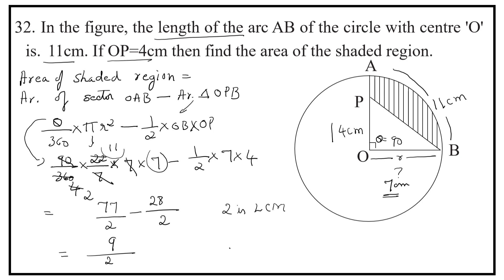If we simplify it, we get 24.5 centimetre square. So, the area of the shaded region is equal to 24.5 centimetre square.